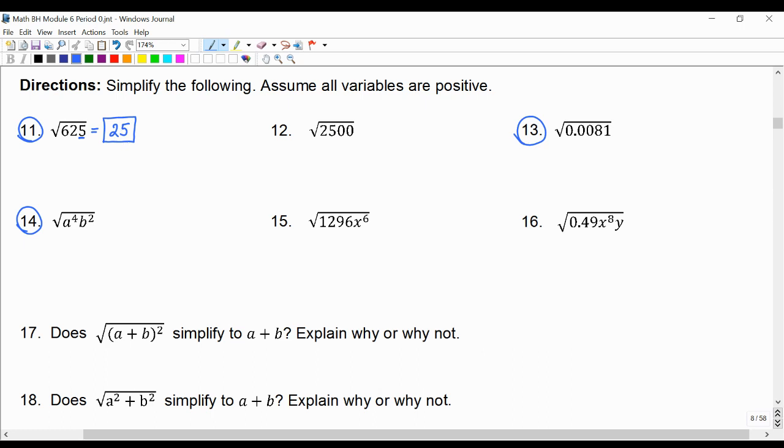Another strategy is if it has a decimal and the last non-zero digits like this 81 are a perfect square. We know the square root of 81 would be 9, and we know that this has four decimal places behind the decimal point.